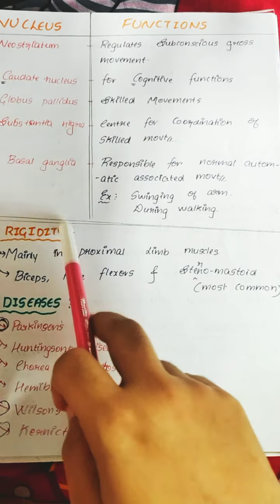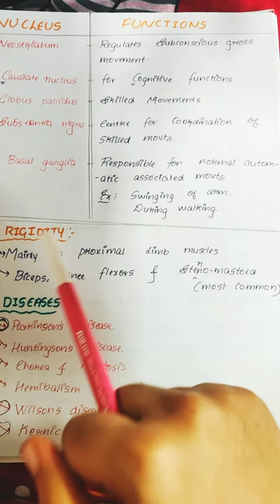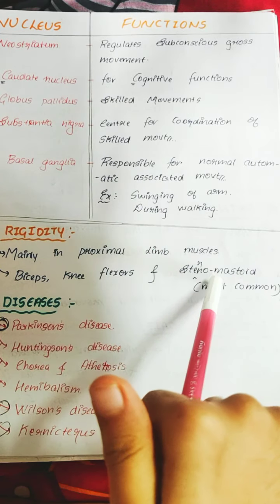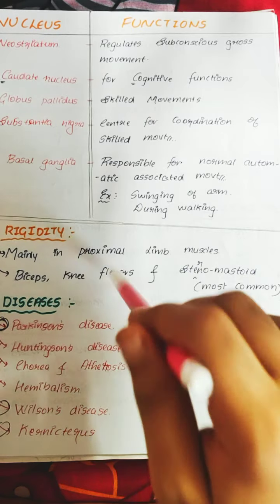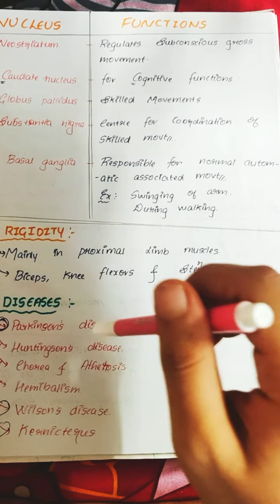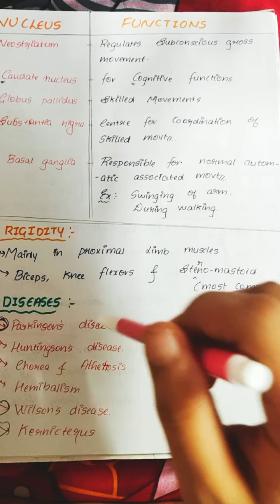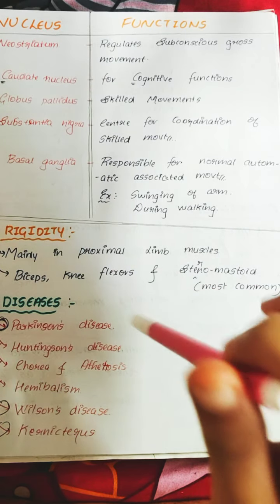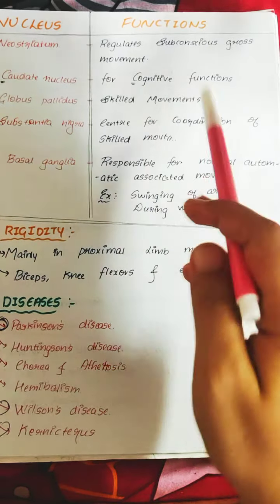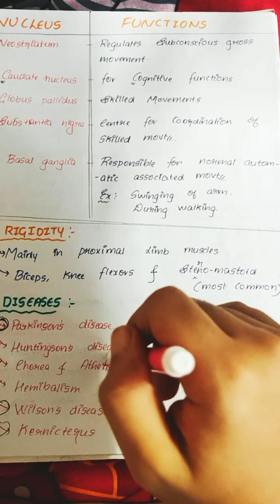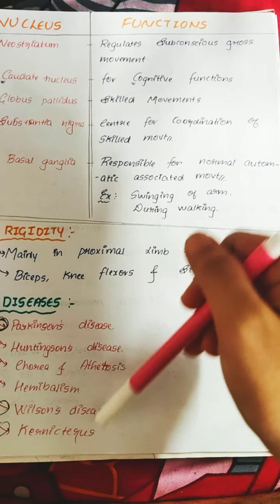Rigidity in basal ganglia lesions is mainly seen in the proximal limb muscles — for example, knee flexors, sternocleidomastoid, biceps, and triceps. Diseases associated with basal ganglia lesions include Parkinson's disease (most important, 5-mark exam topic), Huntington's disease, chorea, athetosis, hemiballismus, Wilson's disease, and torticollis. We will now focus on Parkinson's disease specifically.